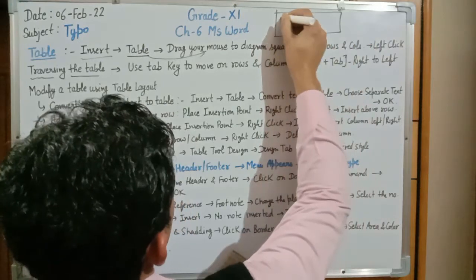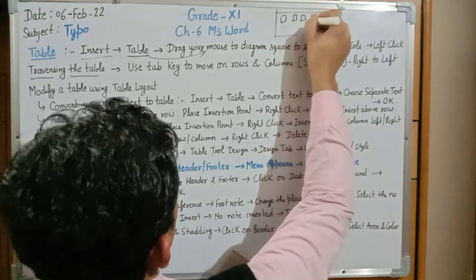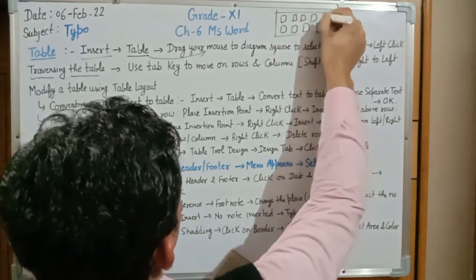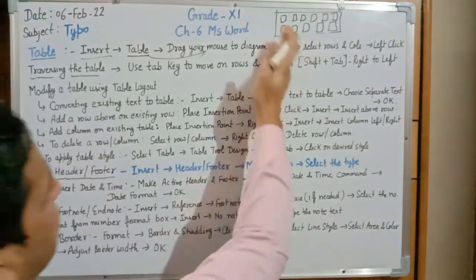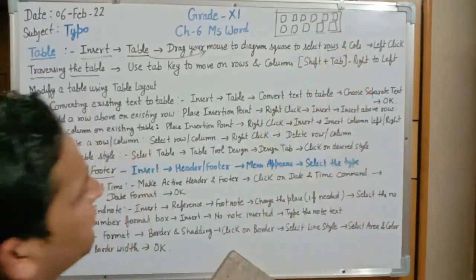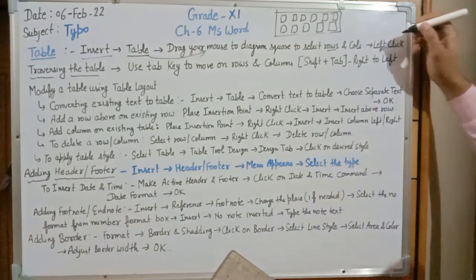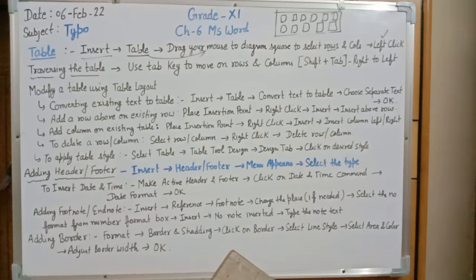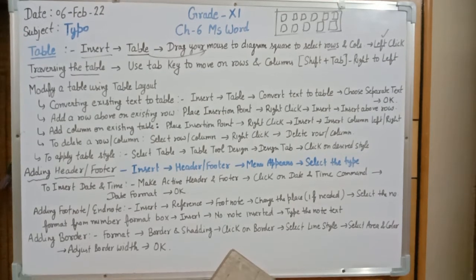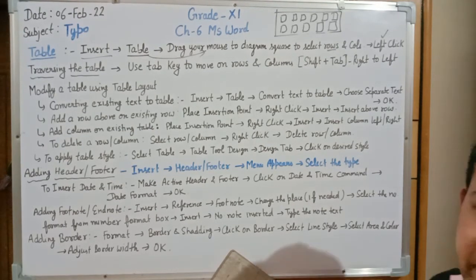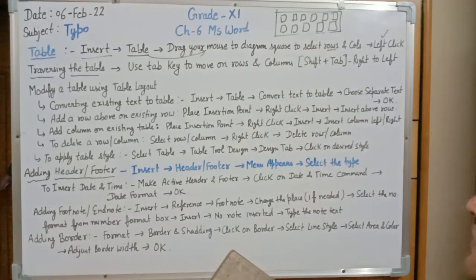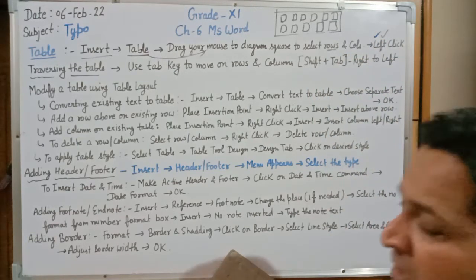When you click on the Table option, a drag box appears in a square format. Bring your cursor there and select the number of rows and columns by left-clicking. So the complete concept is: go to the Insert tab, select the Table option, drag your mouse over the square diagram, and select the number of rows and columns by pressing the left click.